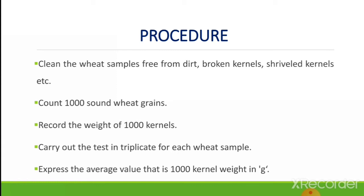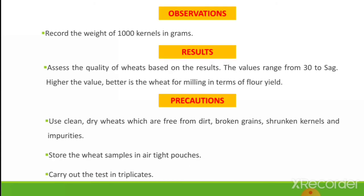The average value of 1000 kernel weight is expressed in grams. In the observations, record the weight of 1000 kernels in grams. In the result, assess the quality of wheat based on the results. The value ranges from 30 to 50 grams; the higher the value, the better the weight for milling in terms of flour yield.